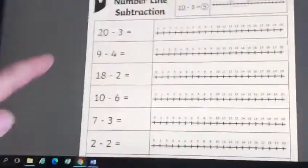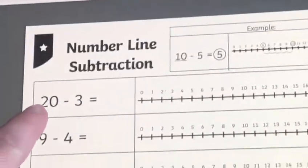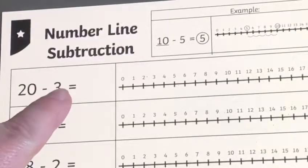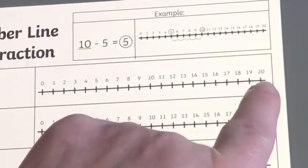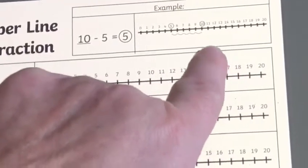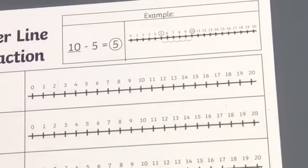If you choose maths activity 1, we are subtracting from 20. So we've got 20, take away 3 equals. So you will start at 20. We won't count that number, but you will count backwards 3 numbers. And then you just write the answer by the side.